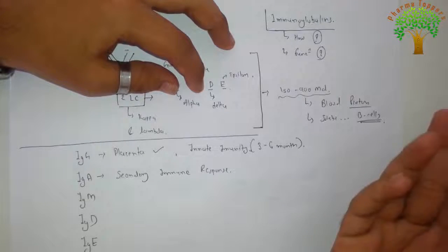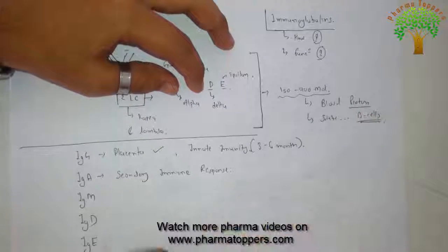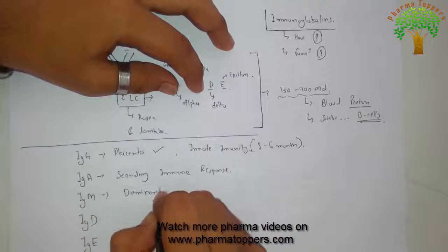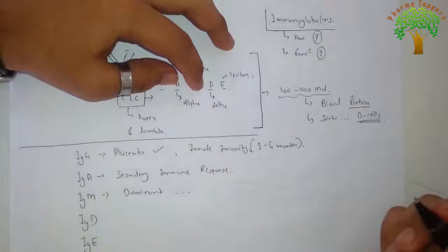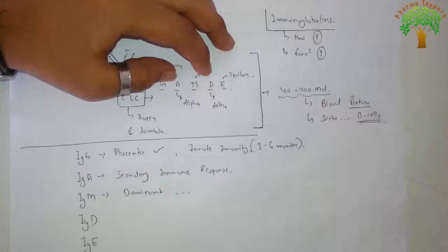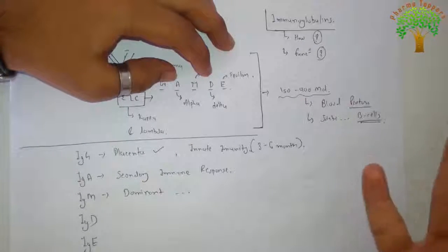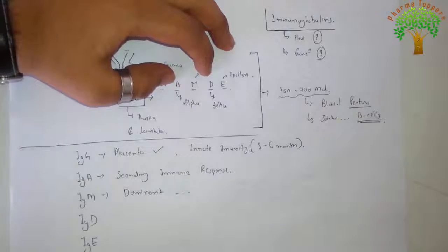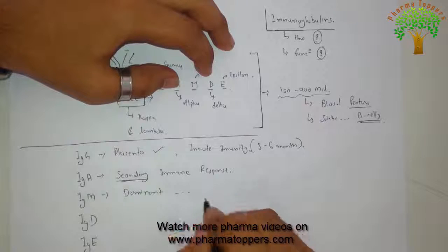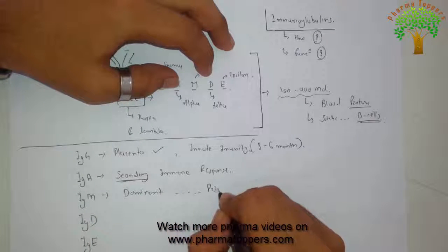The third component is immunoglobulin M. About this, it is the dominant one. You can find this immunoglobulin in most of the immune responses. This one is generally the primary in most immune responses.